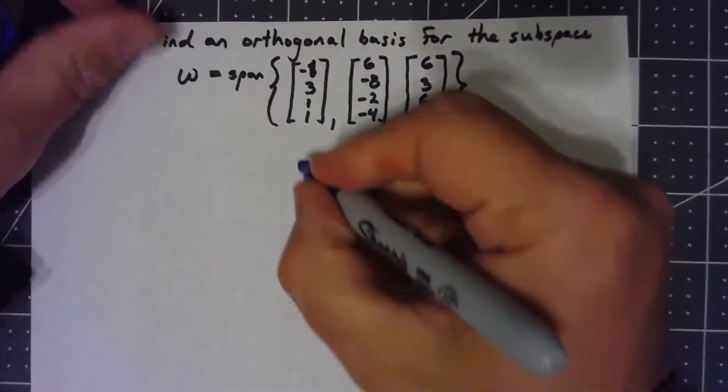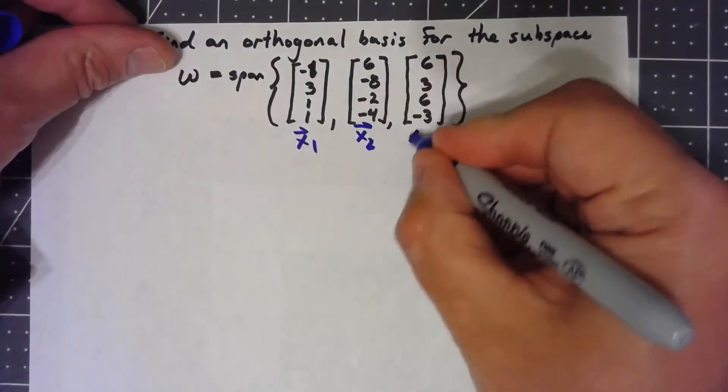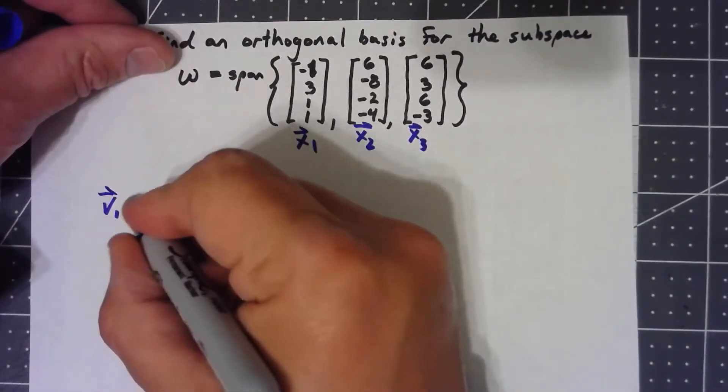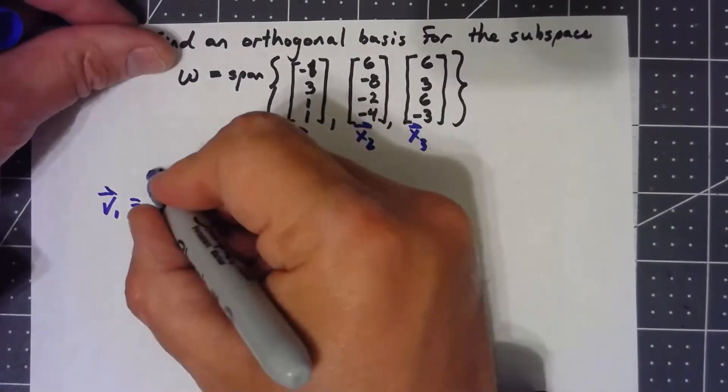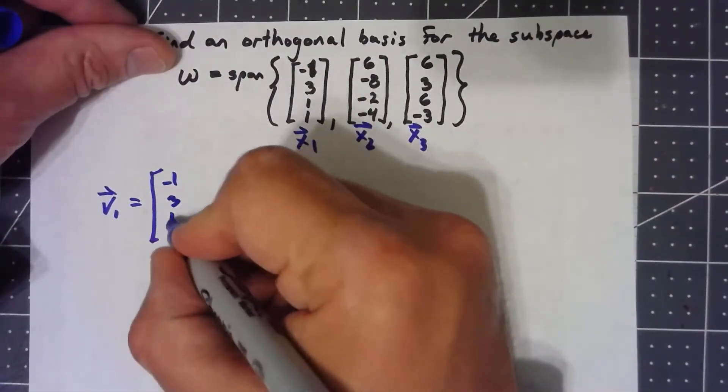Okay, so these are my x vectors. This is my x1, x2, and x3. My v1 is just my x1. It's just negative 1, 3, 1, 1.